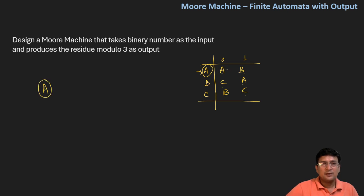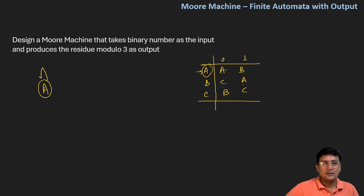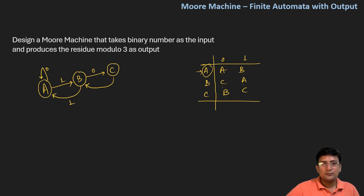State A on zero symbol, you remain at state A. By getting a one, you move to state B. In state B, by getting a zero, you move to state C. And if you get symbol one, you remain at state C.